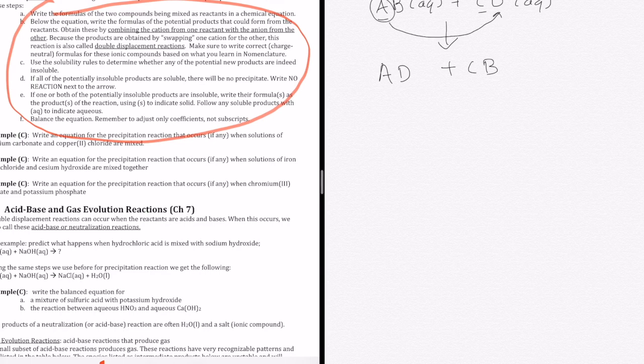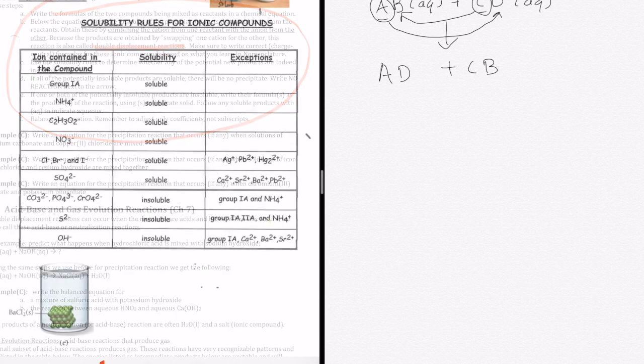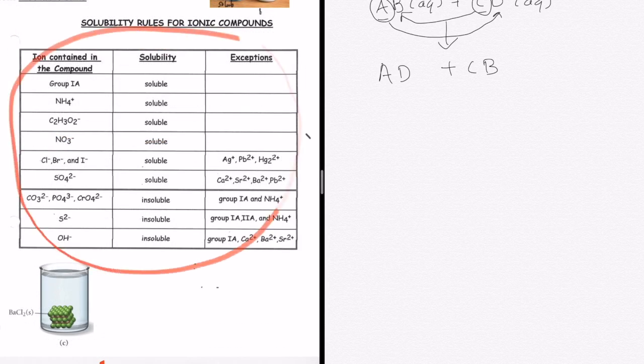So we take this and partner up with that. We take this and partner up with that. This type of reaction is what we call a double displacement reaction because both cations are swapped. You'll see in a later video that we also have a single displacement reaction. We then use the solubility rules to determine whether CB and AD are soluble or insoluble.